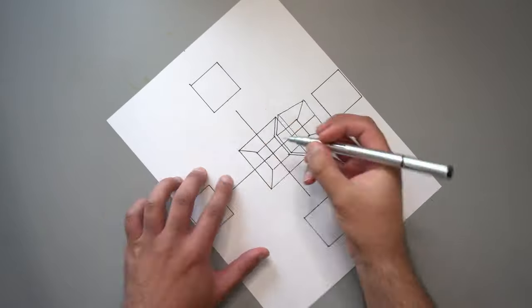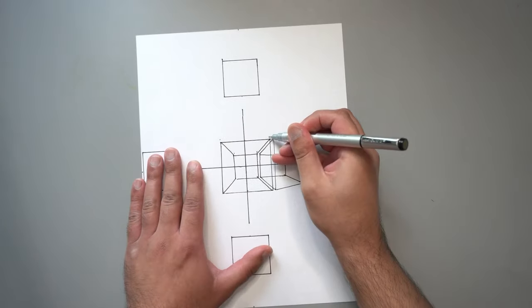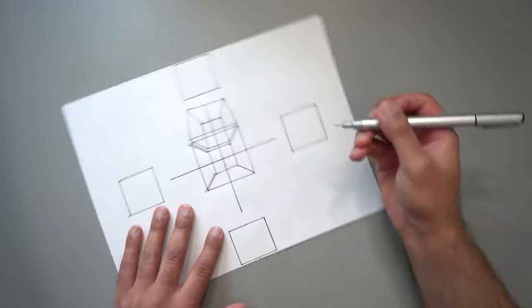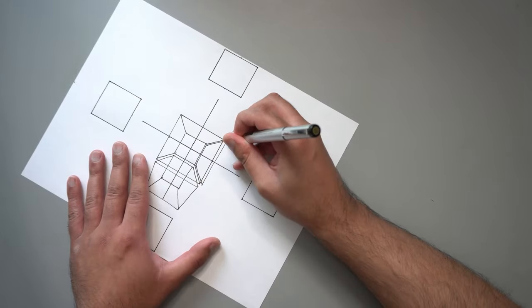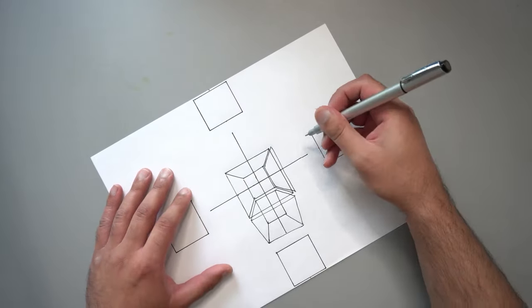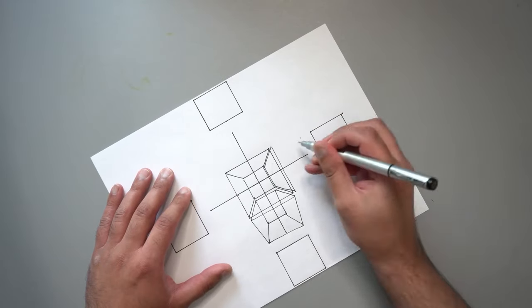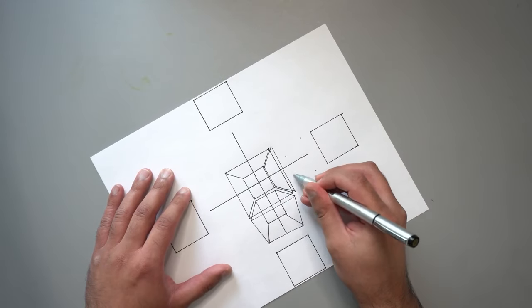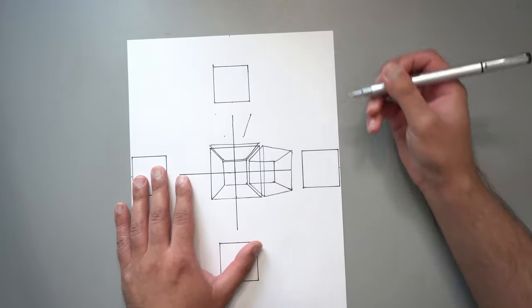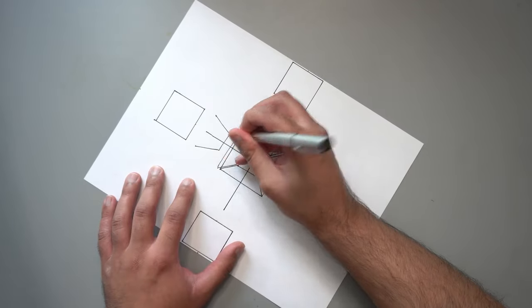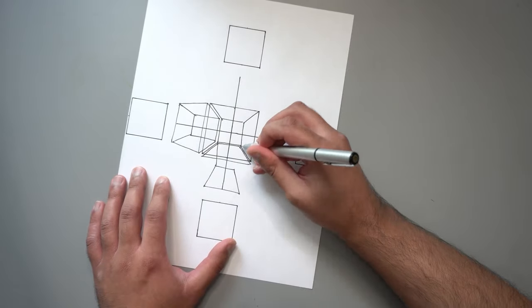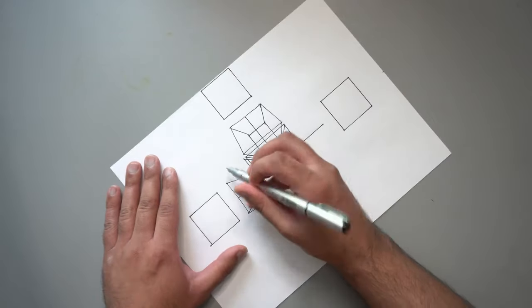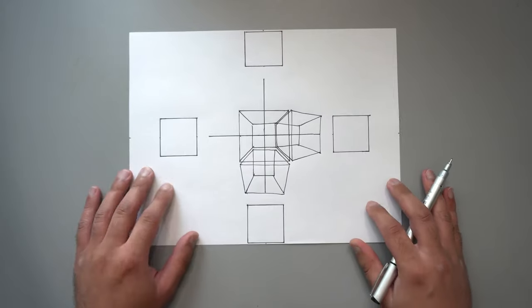This process will mirror that of the previous one, and if you rotate your page 90 degrees, it will be identical. To quickly reiterate the steps: first we'll draw the edges of this new box which neighbor those of the central one. Then, keeping in mind the sliding of the vanishing points due to the rotation of our sets of parallel edges, estimate the positions of the remaining corners. Finally, draw the remaining edges using the ghosting method as always.